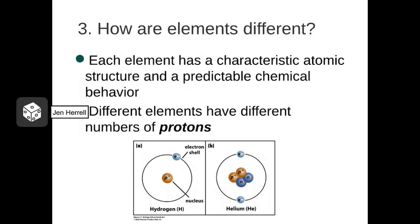Next we're going to discuss what makes the atoms of different elements different from one another. Different atoms have different numbers and arrangements of subatomic particles, but which one is really important in defining an element? It turns out that it's the protons that are most important — we define a specific type of element based on the number of protons that it has.